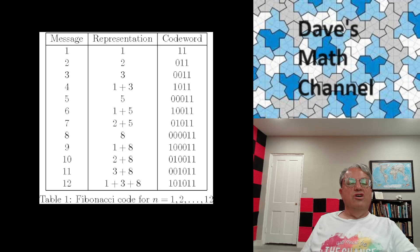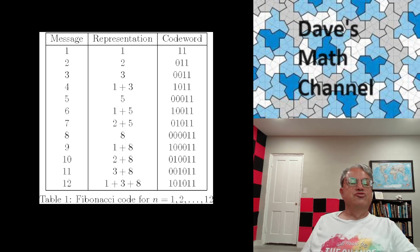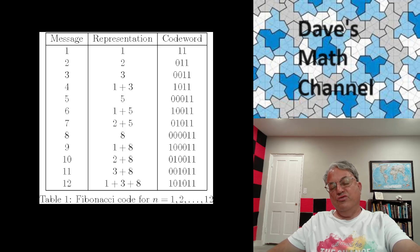Think of a string of Fibonacci numbers — the coefficients are 0 or 1 depending on whether that Fibonacci number appears in the representation. For example, the Zeckendorf representation of 12 is written as 1, 0, 1, 0, 1 — meaning F6 plus F4 plus F2. For 9, it's 1, 0, 0, 0, 1 — that's F6 plus F2. You always get a string of zeros and ones with no two consecutive ones.